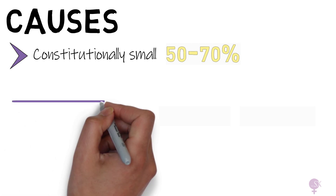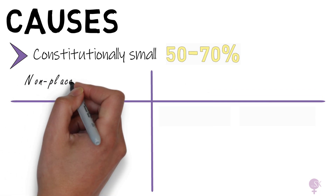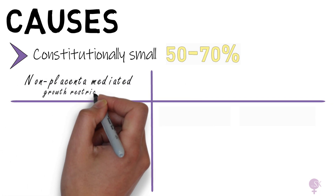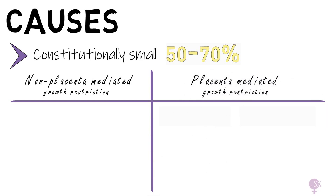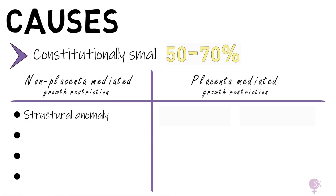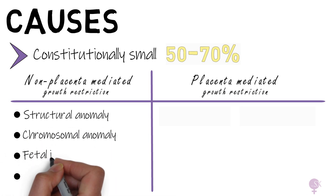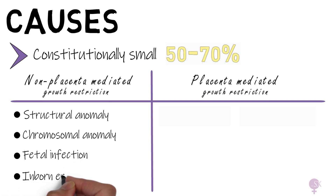Next, we have pathological causes, and these are divided into two: non-placenta-mediated growth restriction and placenta-mediated growth restriction. Starting with non-placenta-mediated growth restriction, we have structural anomaly, chromosomal anomaly, fetal infection, and inborn errors of metabolism, which could all contribute to a smaller baby. Placenta-mediated growth restriction refers to issues with the placenta, resulting in a lack of nutrients and oxygen getting to the baby, making a small baby.